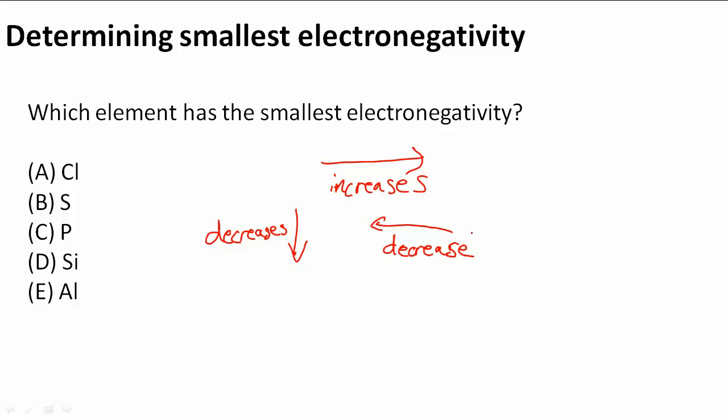You would use your periodic table, and you could use your fingers or pen to mark the periodic trends to help you better understand where the smallest electronegativity is.